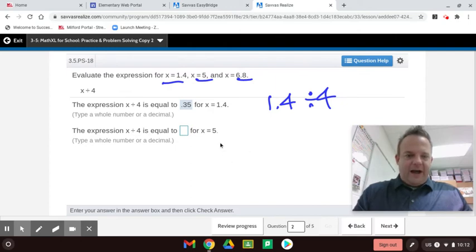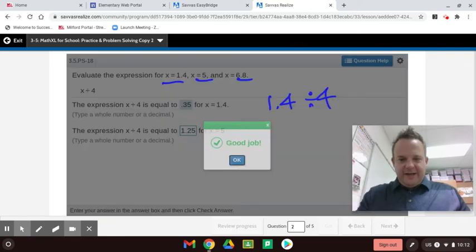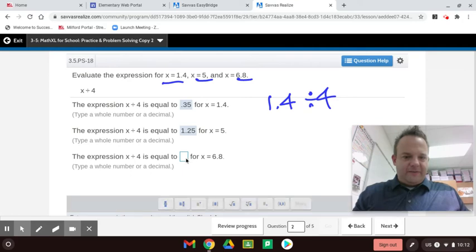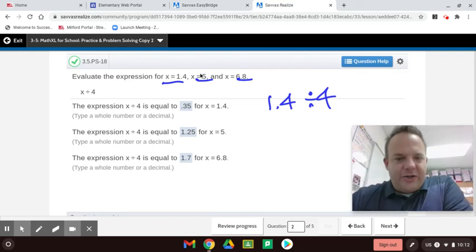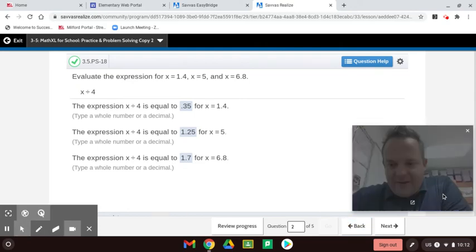So this one equals 0.35. And now we're going to try with 5 in there. So 5 divided by 4, that equals 1.25. And then 6.8 divided by 4, that equals 1.7. So we tried out different ones, and maybe one day we'll graph them and we'll compare them. That's how that works.